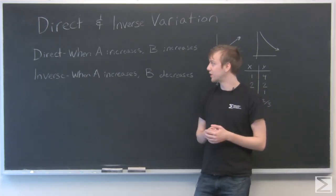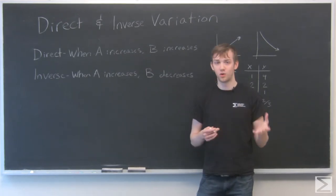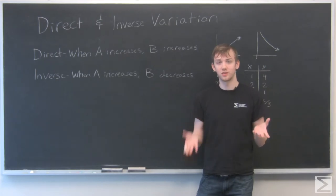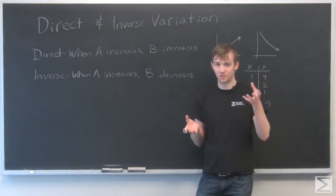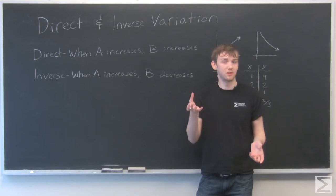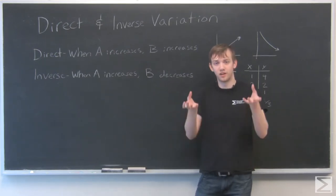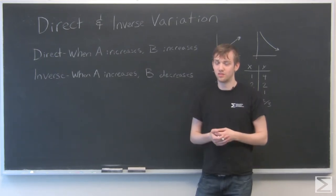The first kind of variation is direct variation. This is when quantity A increases, quantity B increases along with it. And along the same lines, if quantity A decreases, quantity B decreases along with it. So both are moving up and down in relation to each other.